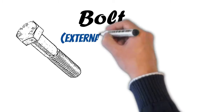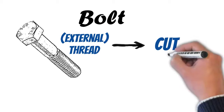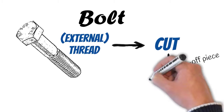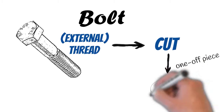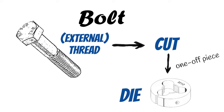The thread on a bolt is cut. Normally nowadays the thread is cut using a CNC machine, but for a one-off piece you also need to use this — and this is a die. You cut an external thread with a die.